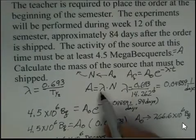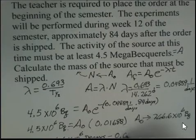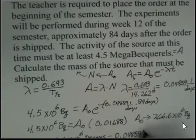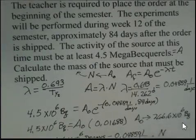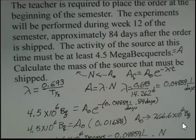And now I need the lambda. My lambda is 0.04859, 1 over days, and then N. Can I go ahead and put the numbers into the calculator right now? And your answer is no. I've got a mismatch in units here.